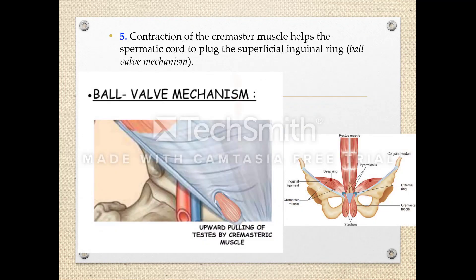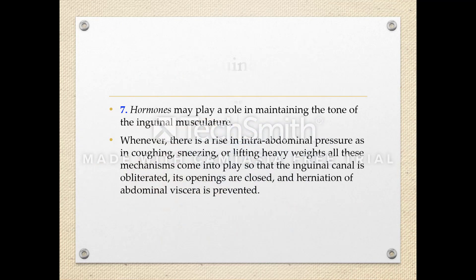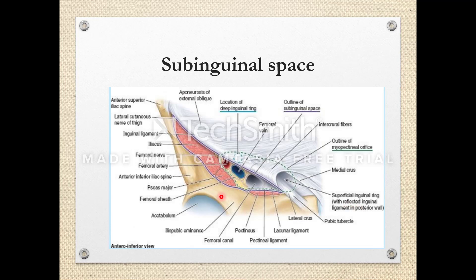The sub-inguinal space is between the hip bone posteriorly and the inguinal ligament anteriorly. It allows passage of the femoral artery, femoral vein, femoral nerve, and the iliopsoas muscle (iliacus and psoas).